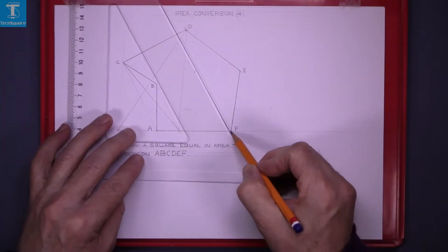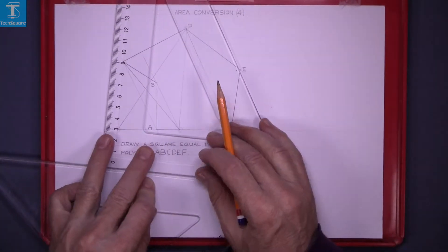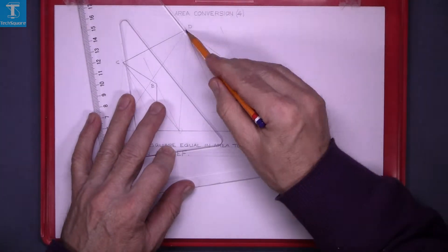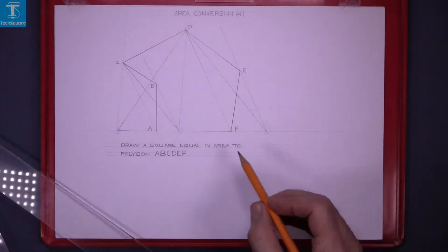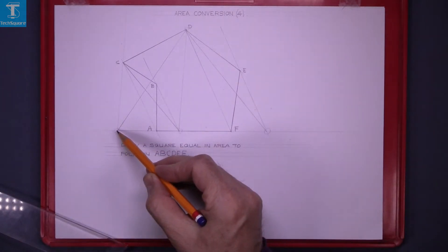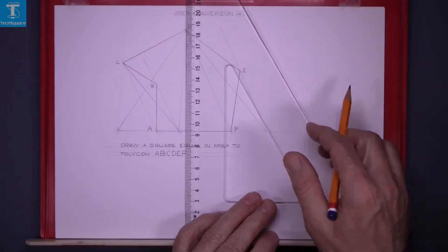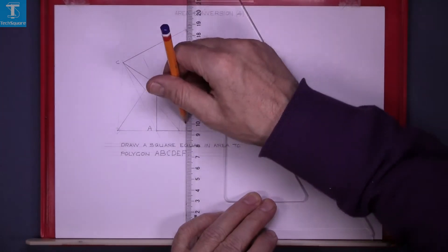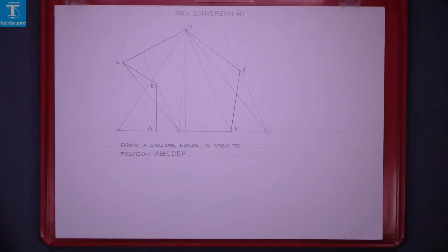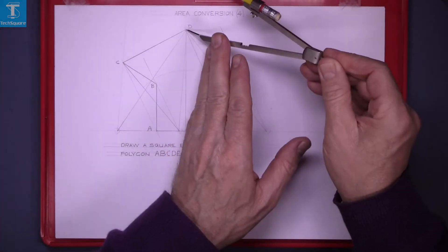Now take off another corner: join D to F and draw a parallel through E. That gives another point on the base. Joining up, we now have a triangle equal in area to the original figure. Draw a perpendicular from the vertex and bisect that line to get a rectangle that is equal in area to the triangle.